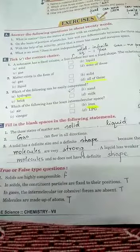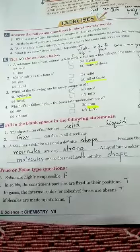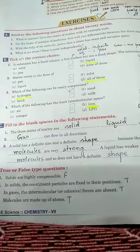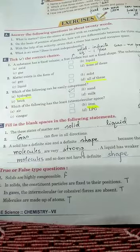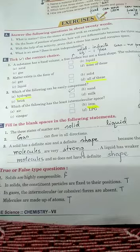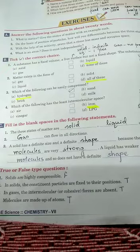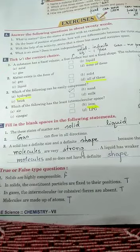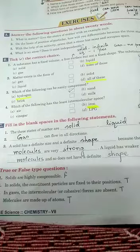Second, Gas can flow in all directions. Number 3. A solid has a definite size and a definite shape because the forces between its molecules are very strong. A liquid has weaker forces between its molecules and so does not have a definite shape.